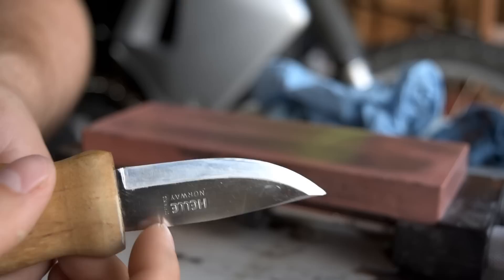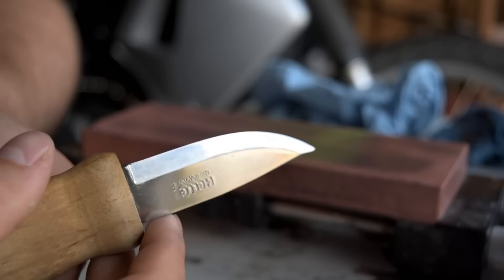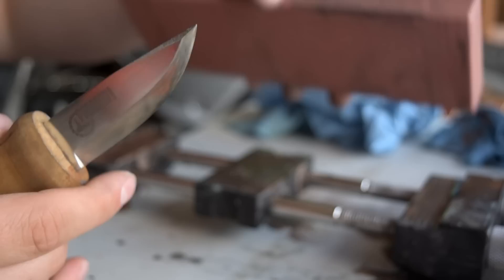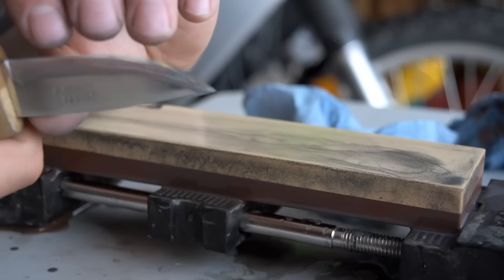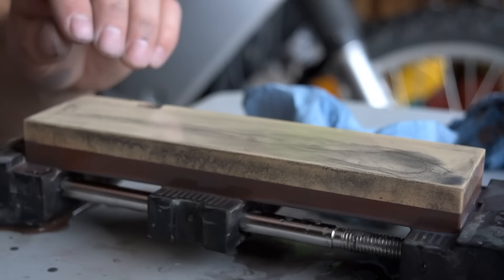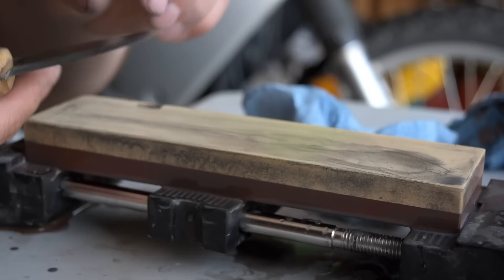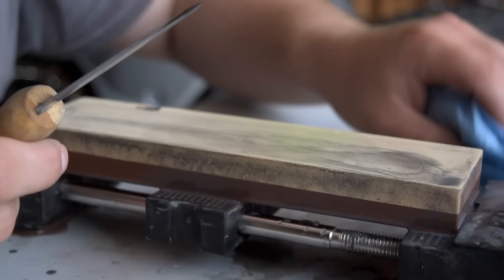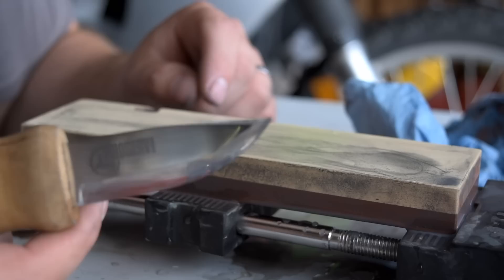That ought to do for a 3000 grit. There it is. This is a real keen edge there now. It'll really bite. Off to 6000 grit. Now is when you'll really see a polish start to emerge.